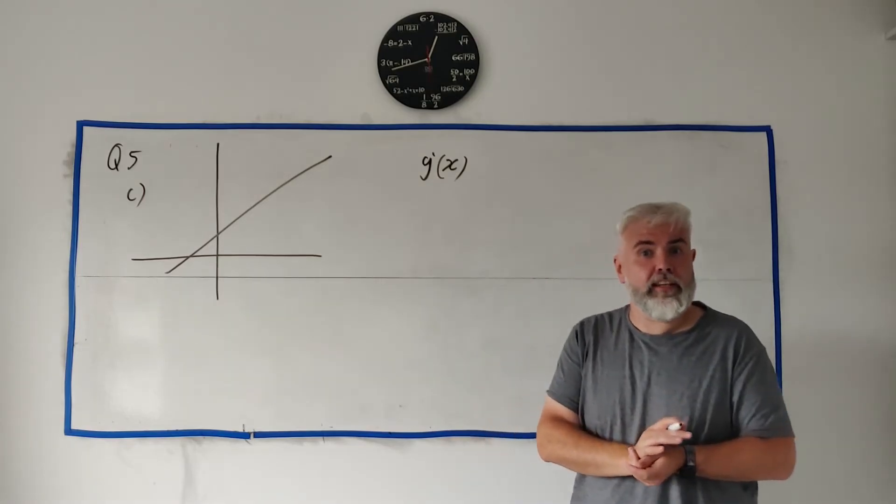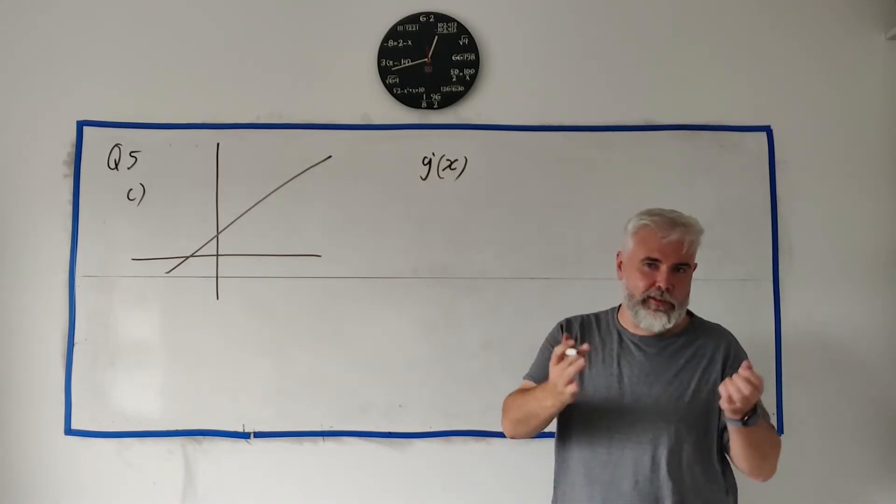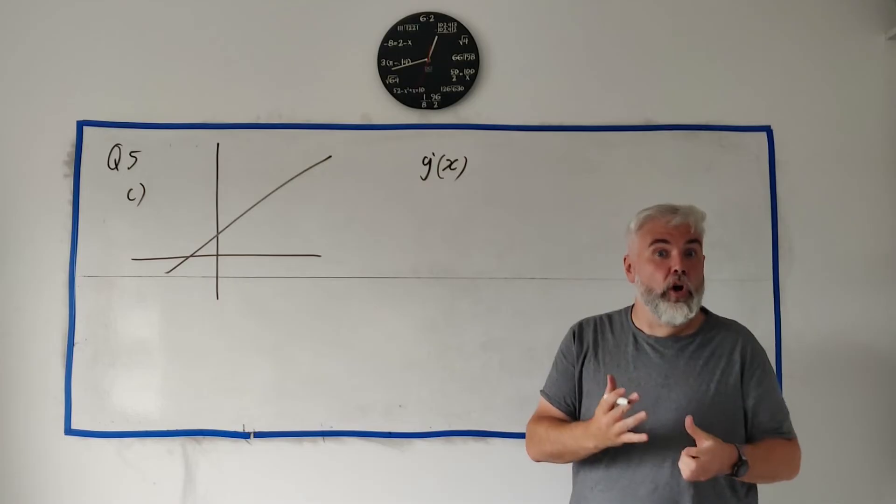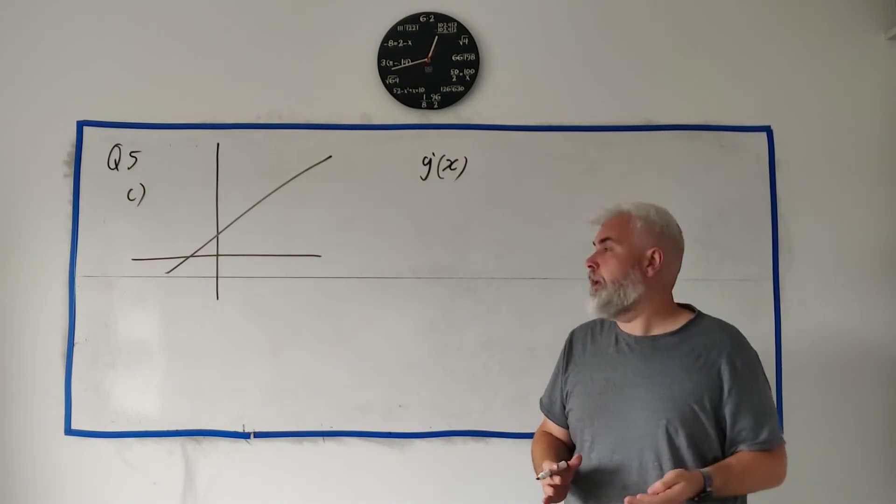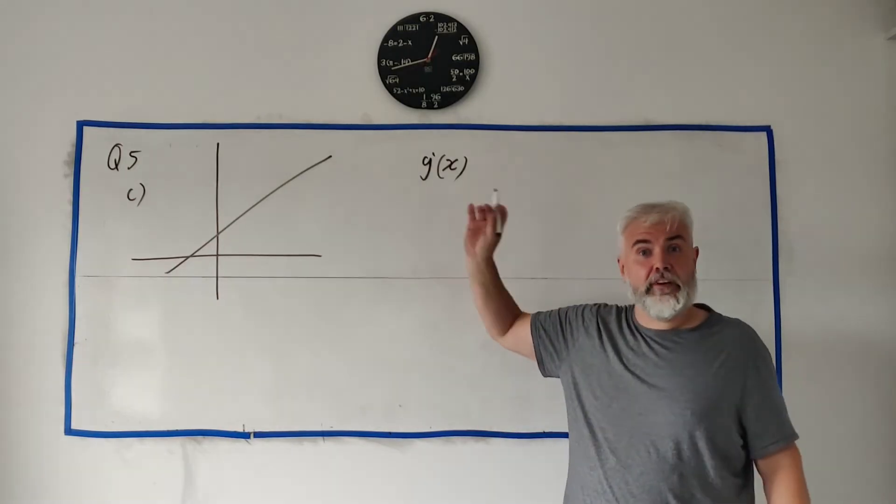There's one other thing that's the same that they didn't say because it'd be a bit easier: the slope. The slope, the rate of change, the derivative, they're all the same. And so really what they're asking is to find the slope of this.